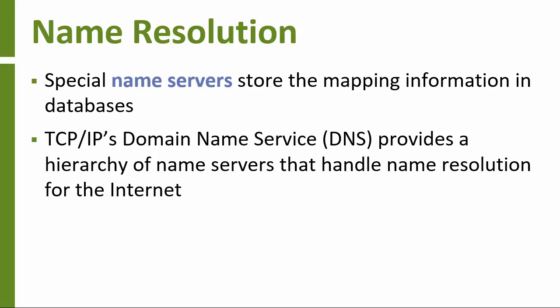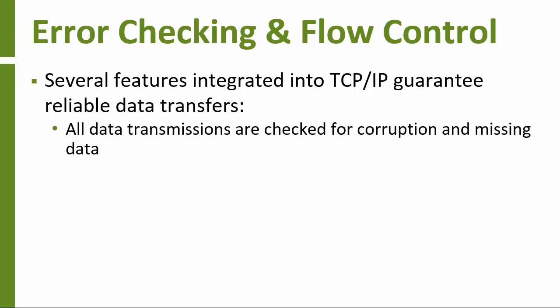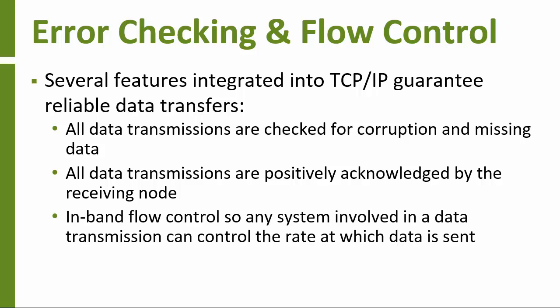Thanks to this system, it's a pretty rare thing for an average user to have to deal with numerical addresses. There are several features of the TCP-IP protocol family that guarantee data will be delivered reliably over a network. These include checking transmitted data for errors, definite acknowledgements of successfully receiving data so a sending computer can be sure it arrived, and flow control so computers and routers along a transmission path can speed up or slow down data rates without needing a separate communication channel.